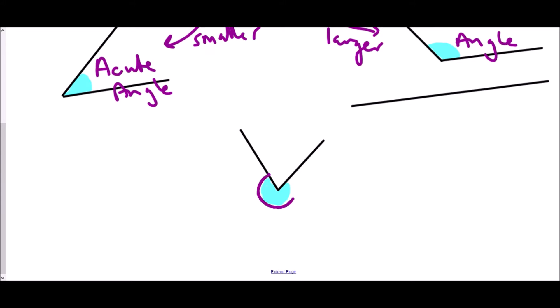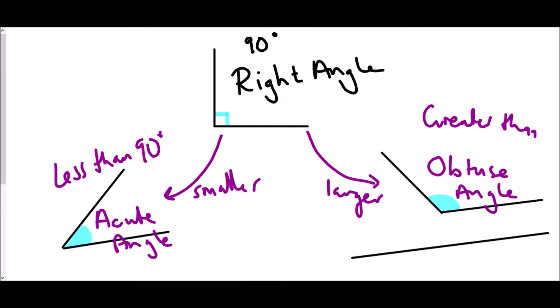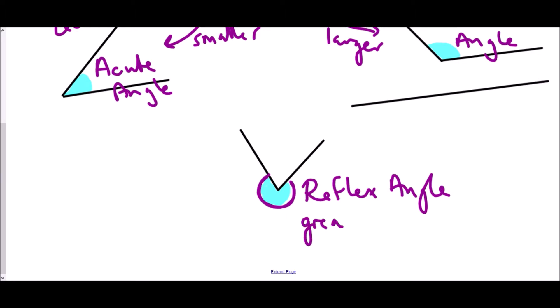What happens when we go beyond 180? We are measuring the angle on the outside this time, and because this angle has flexed beyond 180 degrees — a straight line — we call it a reflex angle. So in each case we have a rule based on the right angle: an acute angle is less than 90 degrees, an obtuse angle is greater than 90 but less than 180 degrees, and the reflex is greater than 180 degrees but less than 360 degrees, which would be a full turn.